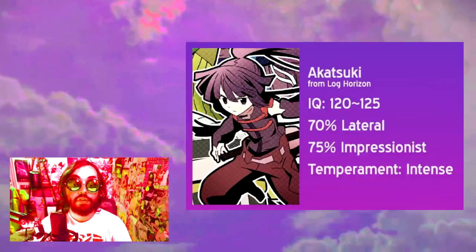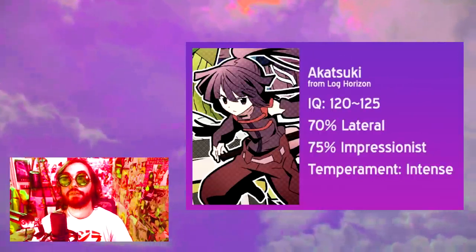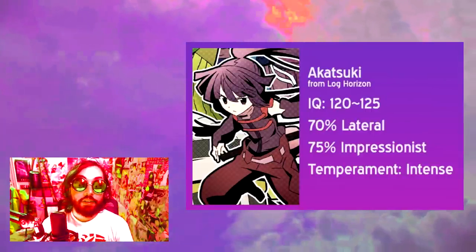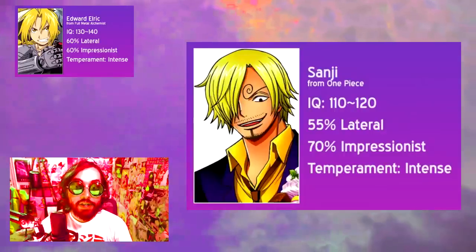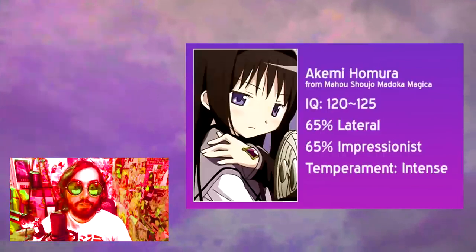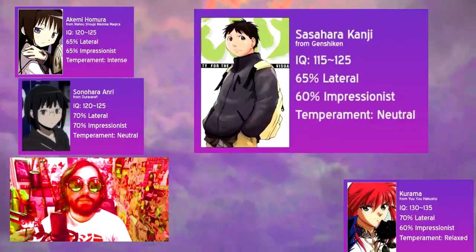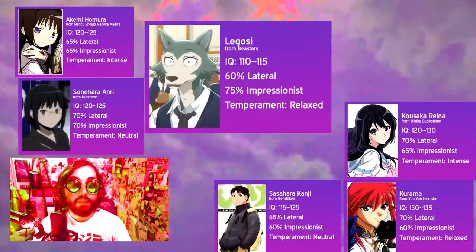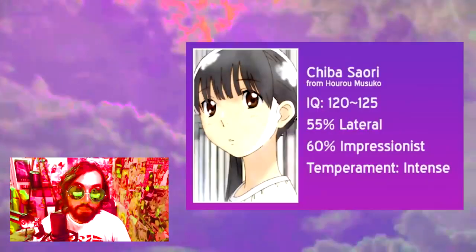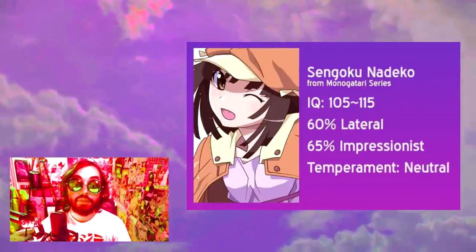Evangelion suggests that the shadow caretaker is only in the shadows because that's where society has decided to put them. Akatsuki from Log Horizon is a great example — an aesthetically obsessed role player who dedicates herself to the service of a loyal master, offering strength from the shadows. Her arc in the first half of season two is basically about achieving the same kind of flow state that Asuka did at the end of Evangelion. Other characters with personalities similar to Asuka include Edward Elric from Fullmetal Alchemist, Sanji from One Piece, and Gintoki from Gintama. Others similar to Akatsuki include Homura from Madoka Magica, Anri from Durarara, and Kurama from Yu Yu Hakusho.